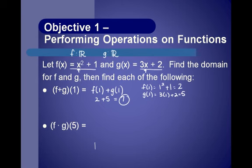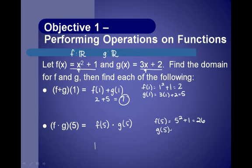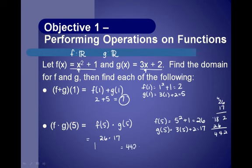Now let's find f times g of 5. By definition, this means f of 5 times g of 5. f of 5 means substitute 5 into x squared plus 1: 25 plus 1 equals 26. g of 5 means substitute 5 into 3x plus 2: 3 times 5 plus 2 equals 17. So f times g of 5 equals 26 times 17, which is 442.